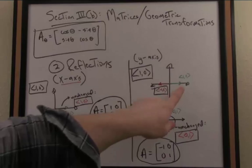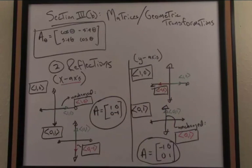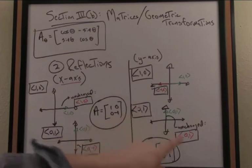If I take the vector 1, 0, and reflect about the y-axis I end up with the resultant vector negative 1, 0. On the other hand if I take the vector 0, 1, reflect about the y-axis, it remains unchanged.